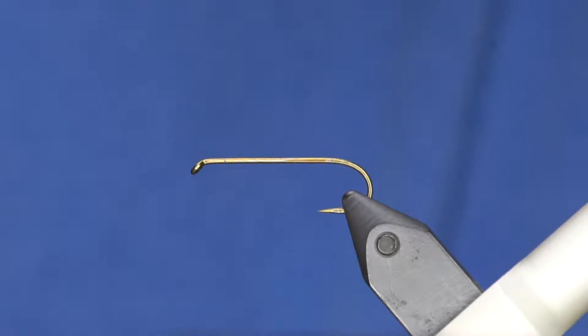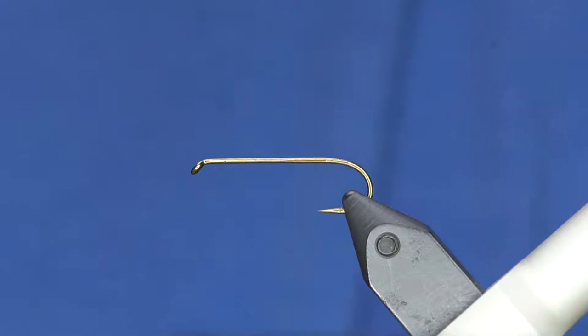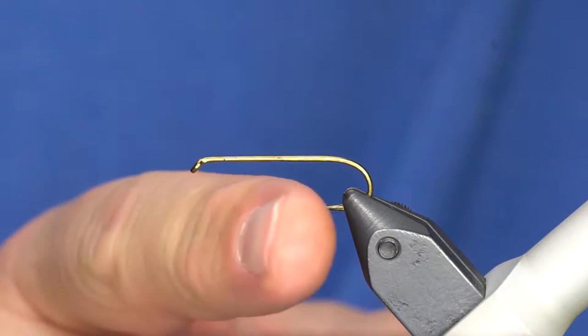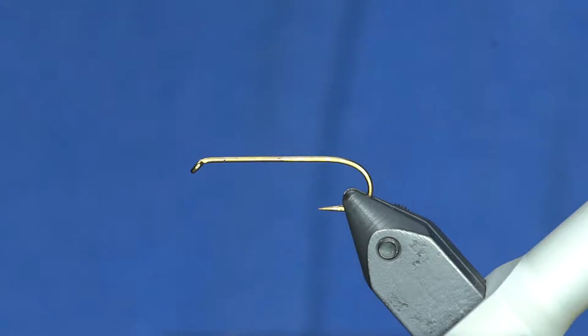The first thing I've changed is I'm using a 3x long hook, this is the TMCO 5263 instead of the 5262. It uses so much foam, it is good to use a heavier wire hook so it'll turn it over. The other main difference is I'm using this new Montana fly photo foam.